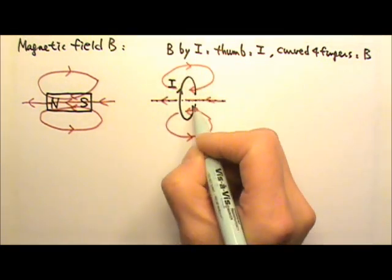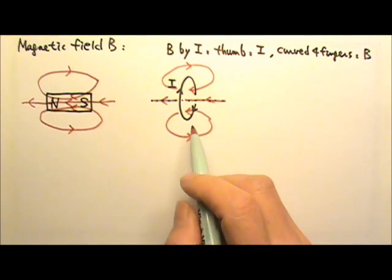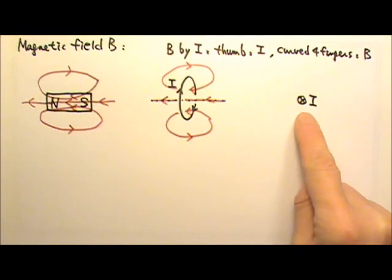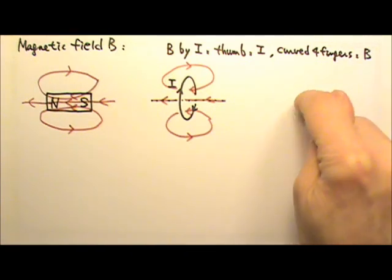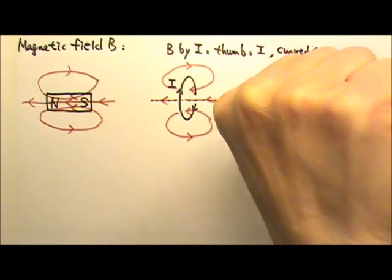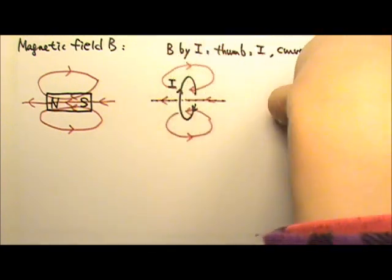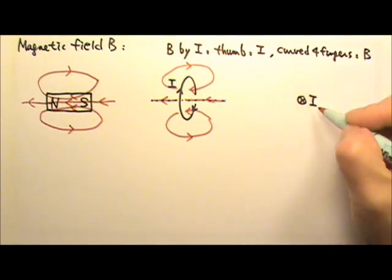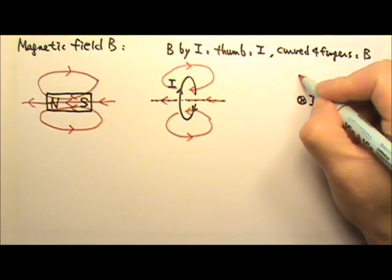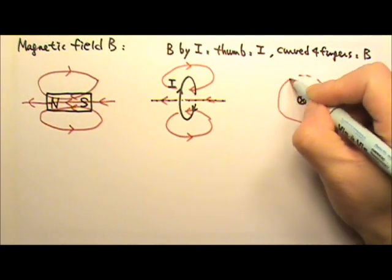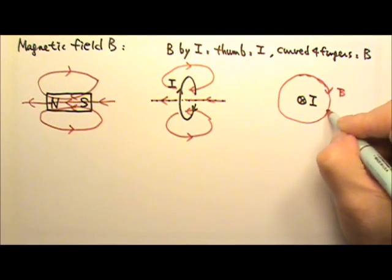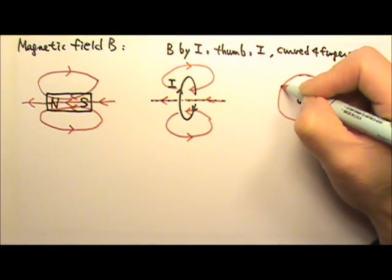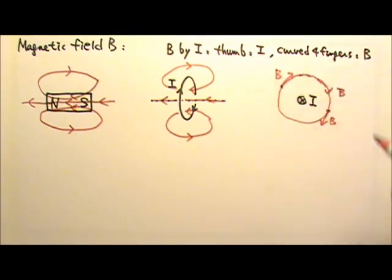So an electric current loop is what we call a magnetic dipole, just like a magnet. If we have a long straight current that goes into the paper, we can use the thumb to follow the current, and then the curved four fingers will go in a clockwise direction. So the magnetic field lines produced by this long straight current would be circles, and the magnetic field direction is clockwise, tangent to the circle.